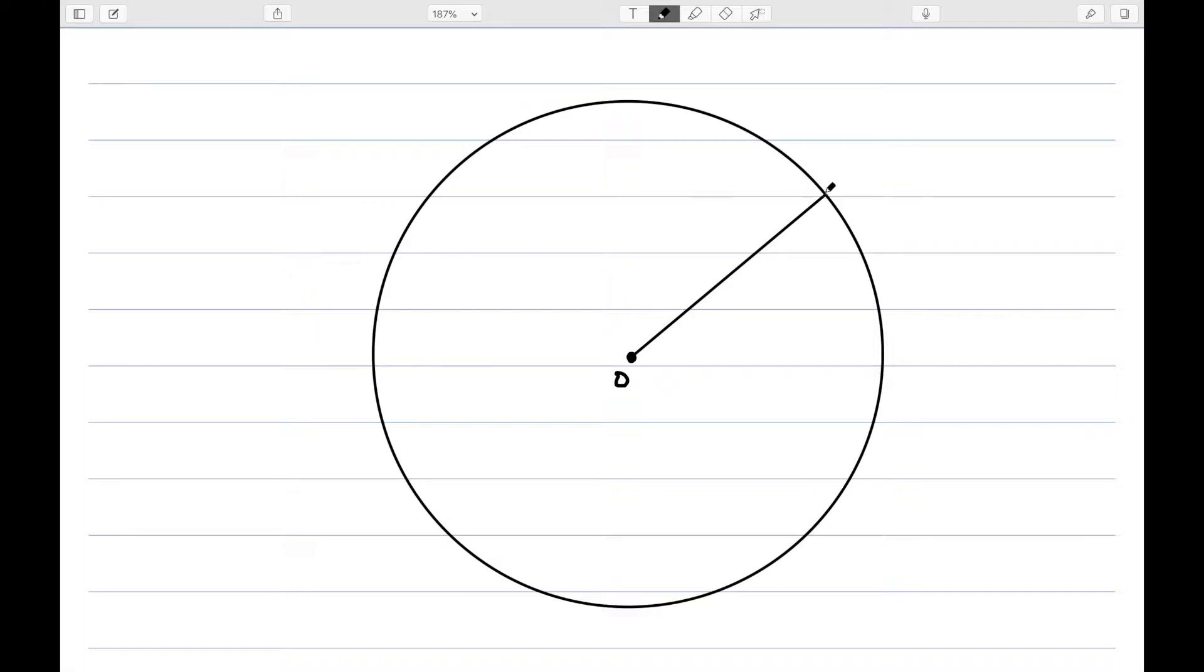One, if I look at any segment O that goes to the actual boundary of the circle, this is known as a radius.